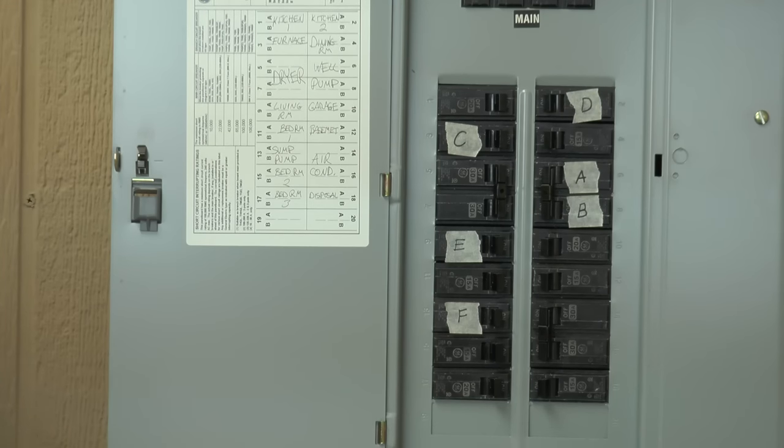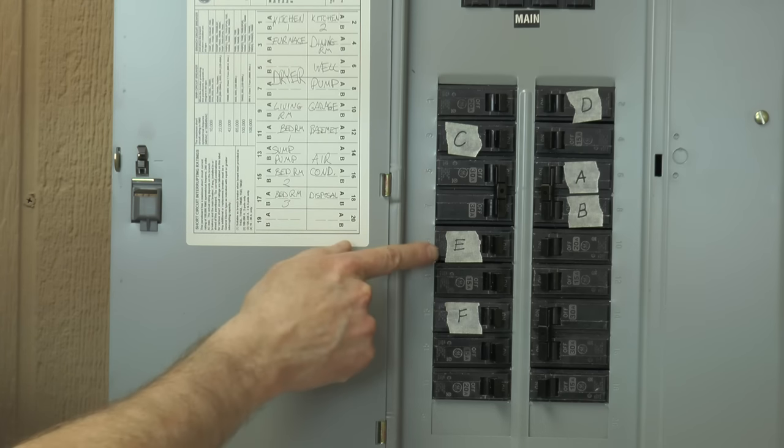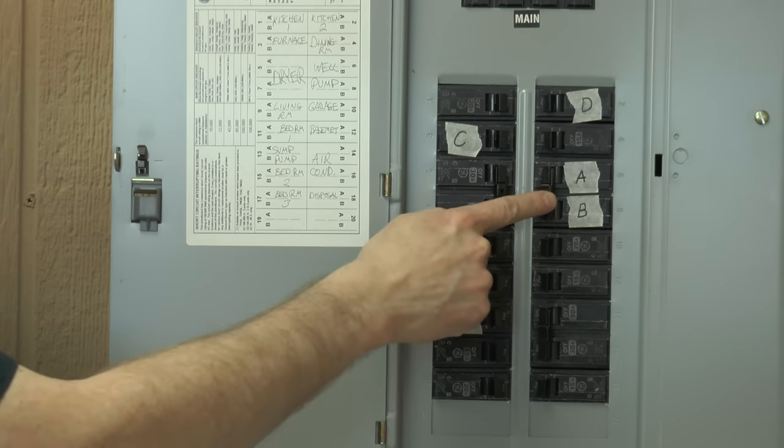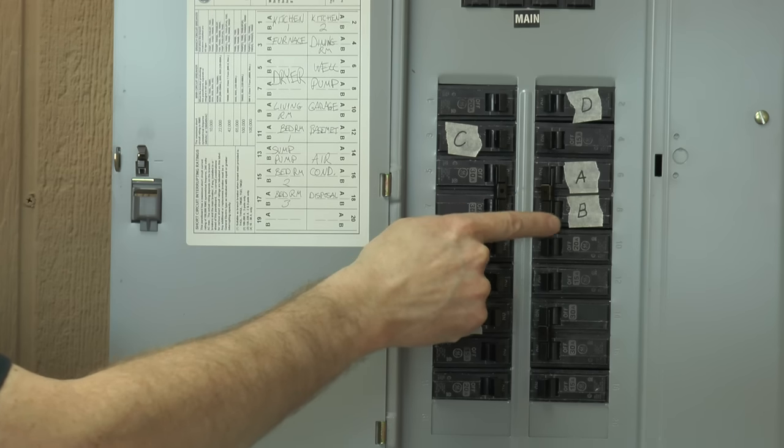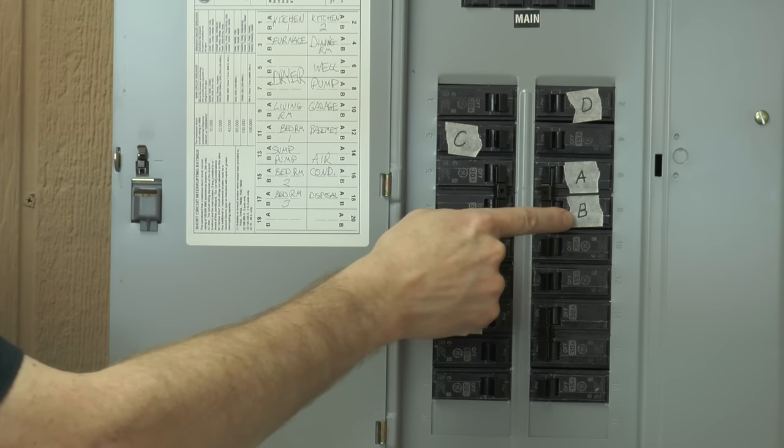I've now finished labeling the circuit breakers. I've chosen also to power the sump pump, living room lights, and well pump. Note that the well pump is on a double pole circuit breaker and will be powered by transfer switch circuits A and B.